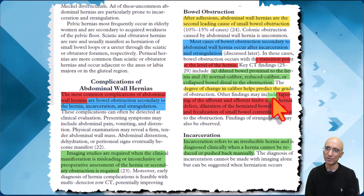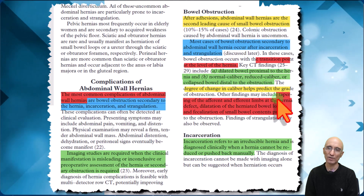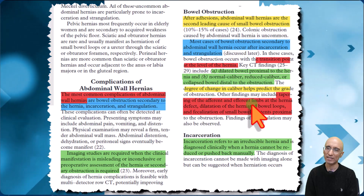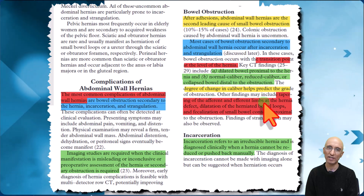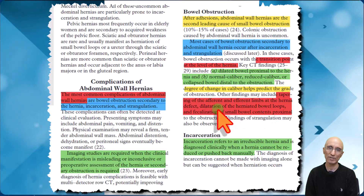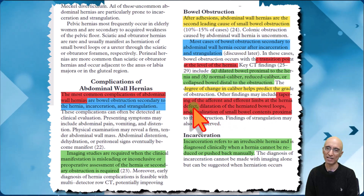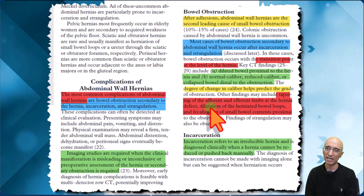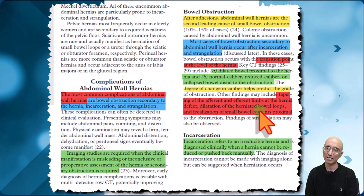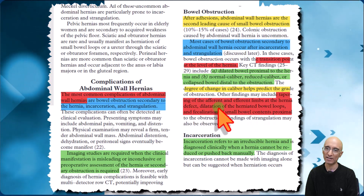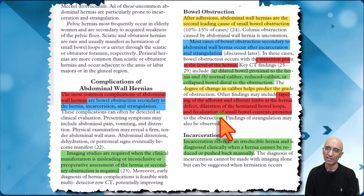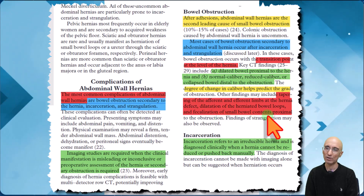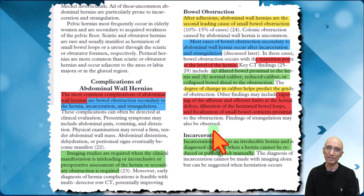Other findings on CT would include tapering of the afferent and efferent limbs of the hernia at the level of the hernia defect, as we saw in our patient. Additionally, though not seen in our patient, there can be dilated loops within the hernia sac and fecalization of the small bowel loops proximal to the hernia.